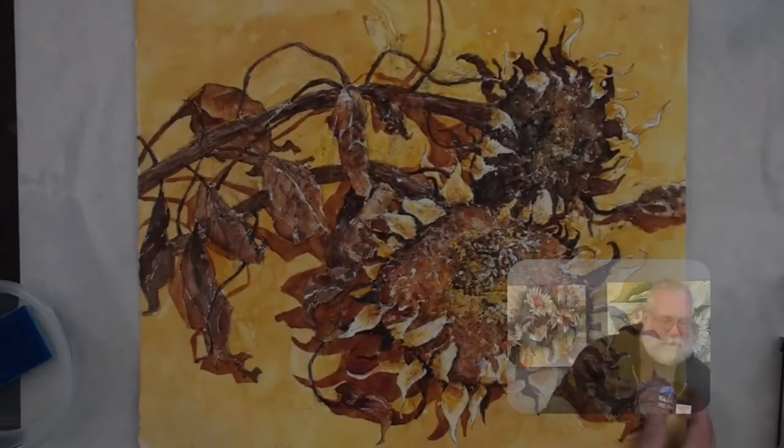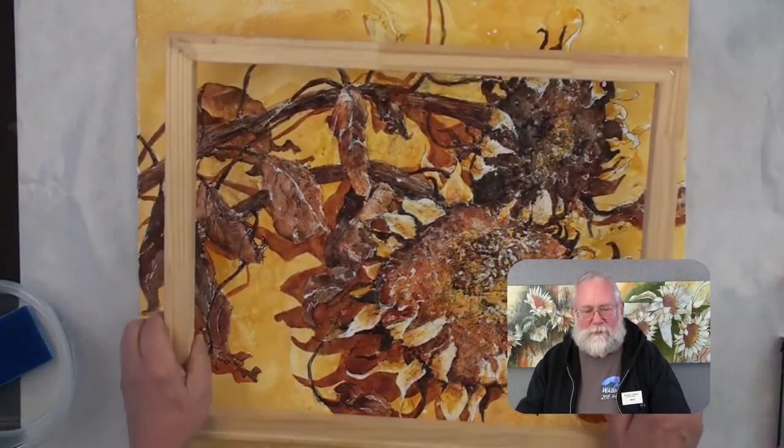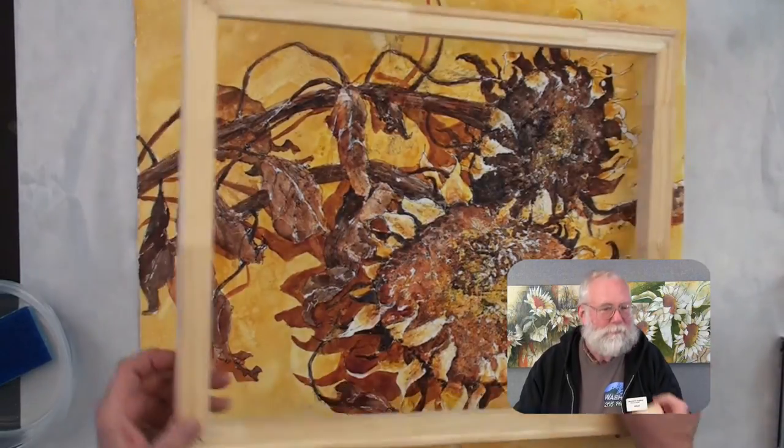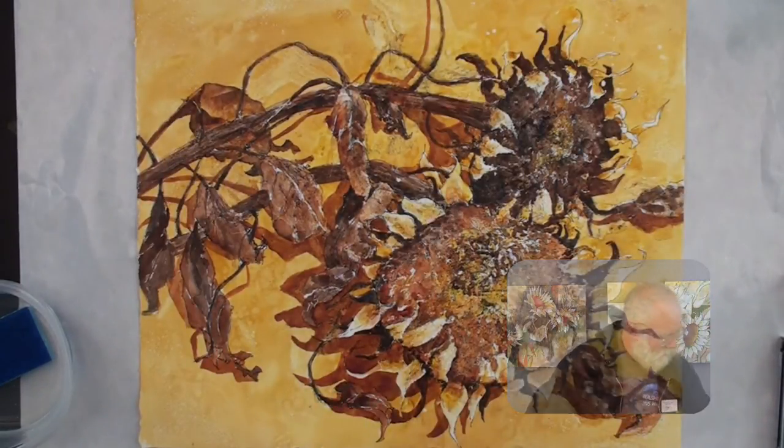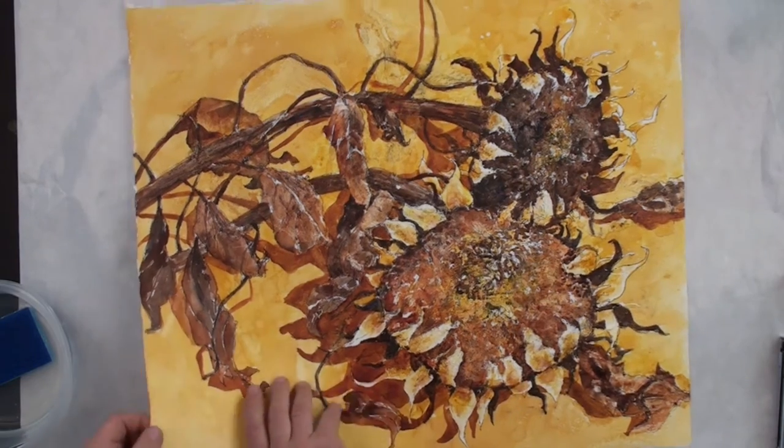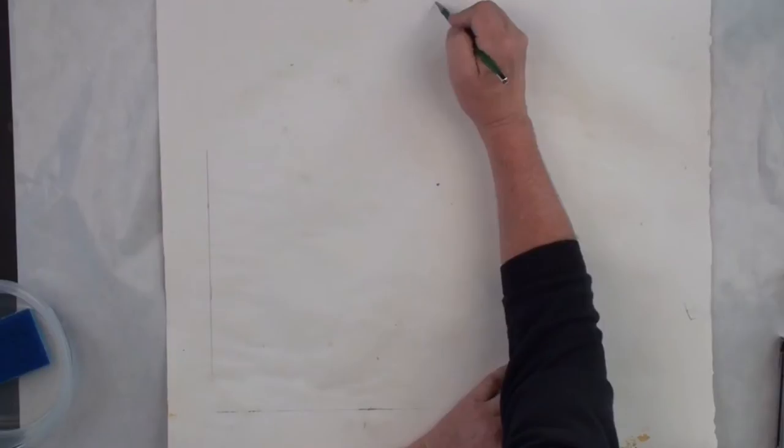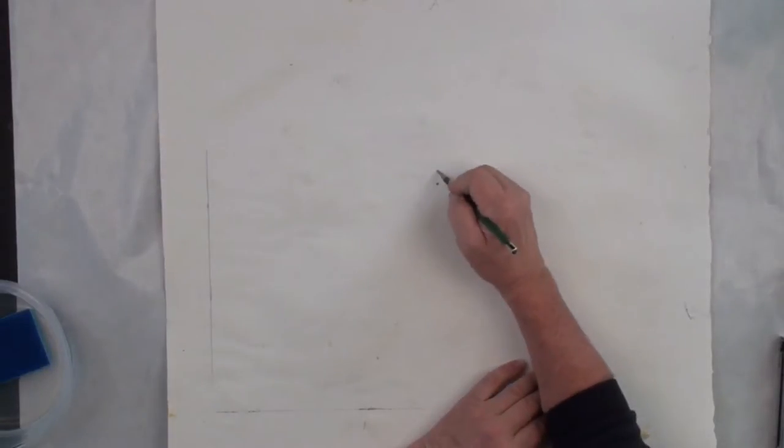Alright, mounting Arches 140 pound cold press on wooden strainer stock, one inch thick. First thing is to determine where the top is. Top of the painting is up here and mark that so we don't forget it. Let's put a little arrow pointing up.